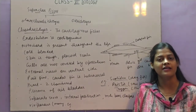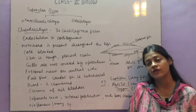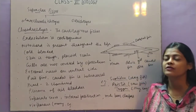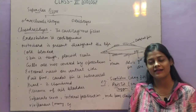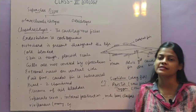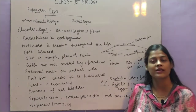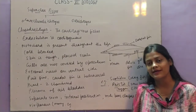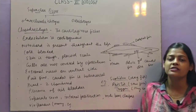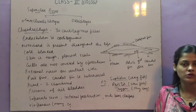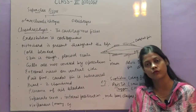Chondrichthyes are the cartilaginous fishes. As they are vertebrates, they have an endoskeleton, but in cartilaginous fishes this endoskeleton is actually cartilaginous — not as strong as bones. So there is an endoskeleton but it is made up of cartilage. The notochord is present throughout the life because they are vertebrates.